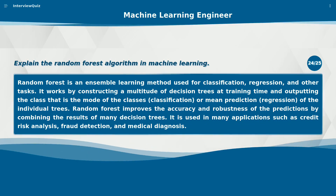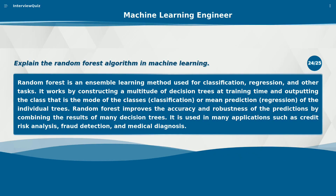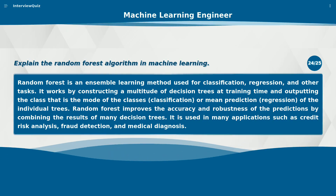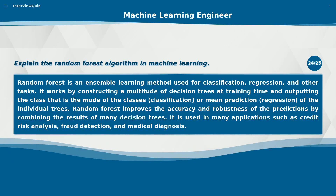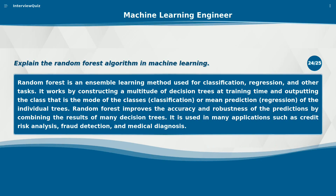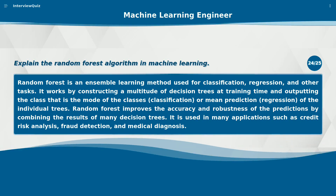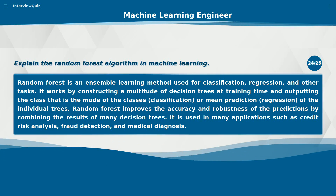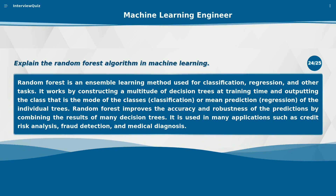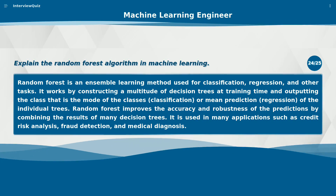Explain the Random Forest algorithm in machine learning. Random Forest is an ensemble learning method used for classification, regression, and other tasks. It works by constructing a multitude of Decision Trees at training time and outputting the class that is the mode of the classes (classification) or mean prediction (regression) of the individual trees. Random Forest improves the accuracy and robustness of predictions by combining the results of many Decision Trees. It is used in many applications such as credit risk analysis, fraud detection, and medical diagnosis.